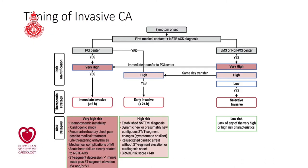Regarding timing of invasive coronary angiography: if a patient at a PCI center has very high ischemic risk — defined by hemodynamic instability, cardiogenic shock, recurrent chest pain despite medical treatment, life-threatening arrhythmias, mechanical complication, acute heart failure, or elevated AVR — they must go to the cath lab within two hours. High-risk ischemic patients defined by established non-STEMI diagnosis, dynamic ST-T wave changes, resuscitated cardiac arrest without ST elevation, or GRACE score more than 140 should go within 24 hours. Low-risk patients can proceed electively or with CT coronary angiography.